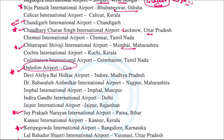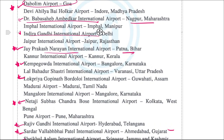Goa Airport is known as the Dabolim Airport. Next is Nagpur Airport, which is Dr. Babasaheb Ambedkar International Airport. Of course, Delhi Airport is IGI — Indira Gandhi International Airport. Patna Airport is Jayaprakash Narayan International Airport, and Bangalore Airport is Kempegowda International Airport.